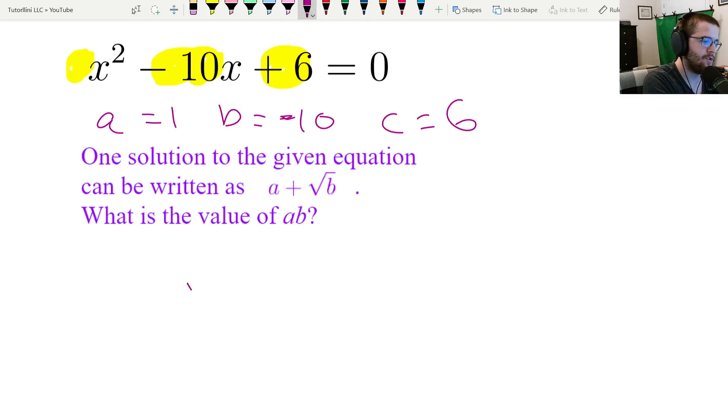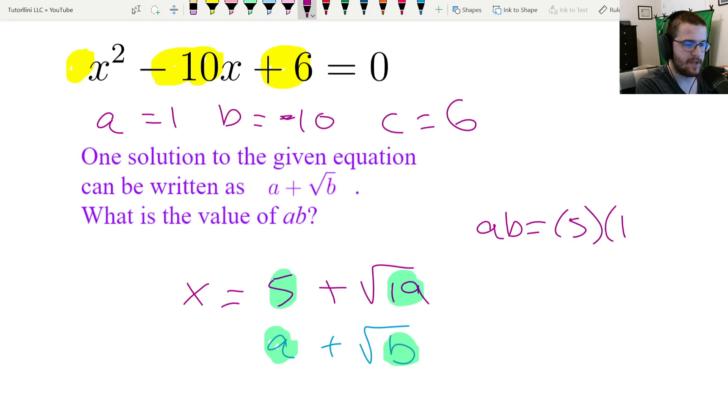Okay, so once again, the solution it's asking us about is five plus root nineteen. If I jot down what it says in the question, a plus square root b, you can see that a is five, and b is nineteen. So the question wants ab, so we're going to do five times nineteen, which is ninety-five, and that would be the answer to this question.